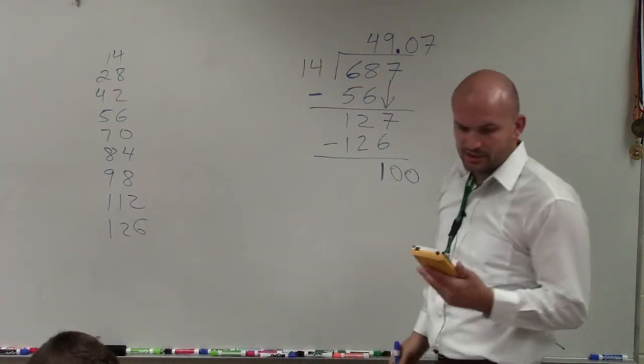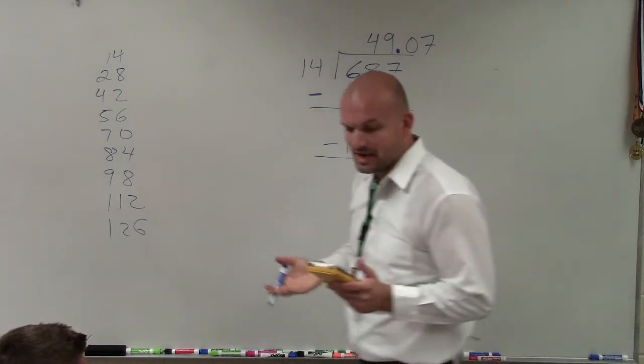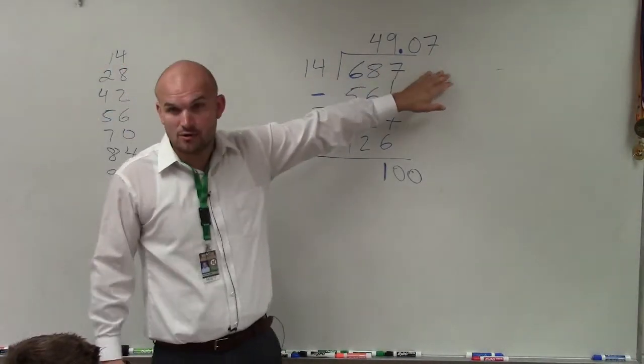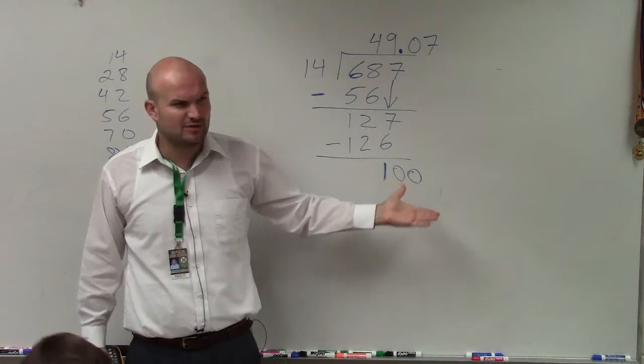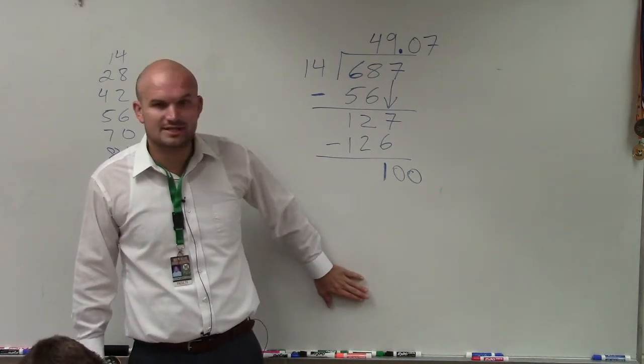And if you guys go ahead and check that on your calculator, you have 687 divided by 14 is 49.07. And obviously, ladies and gentlemen, depending on what decimal point we want you to round to, you would just continue the pattern of what I did. Does anybody have any questions with that? Write it down. You're probably going to want to make sure you continue using that.